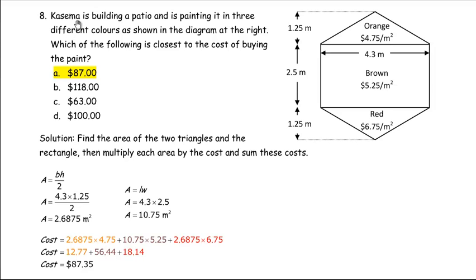Question number 8. Cosima is building a patio and is painting it in three different colors as shown in the diagram at the right. You are asked which of the following is closest to the cost of buying the paint. This is question 8 in the area, perimeter, surface area, and volume for the EQAO grade 9 practice.